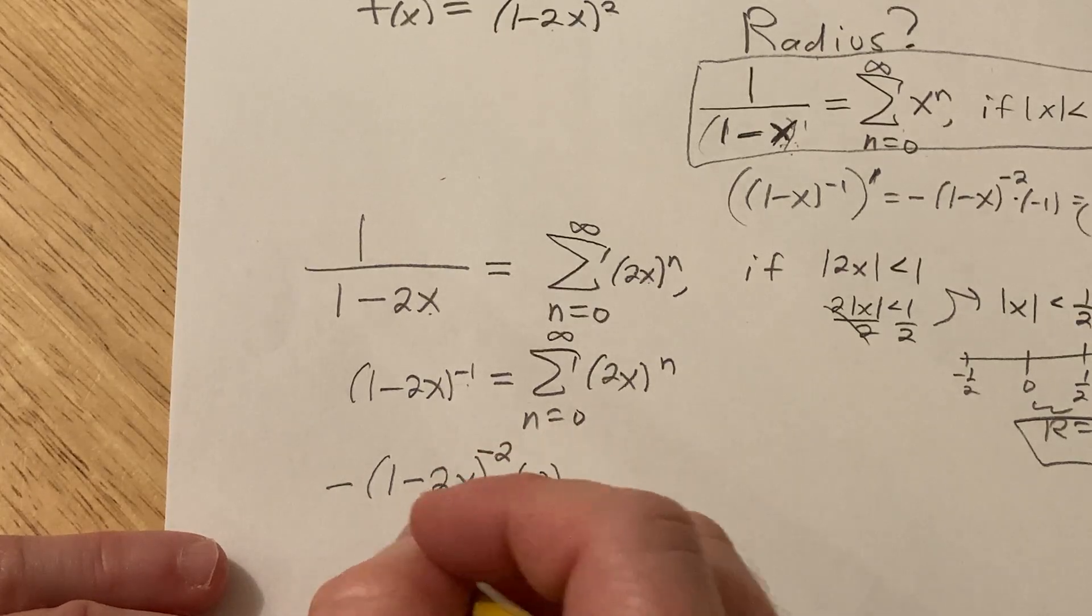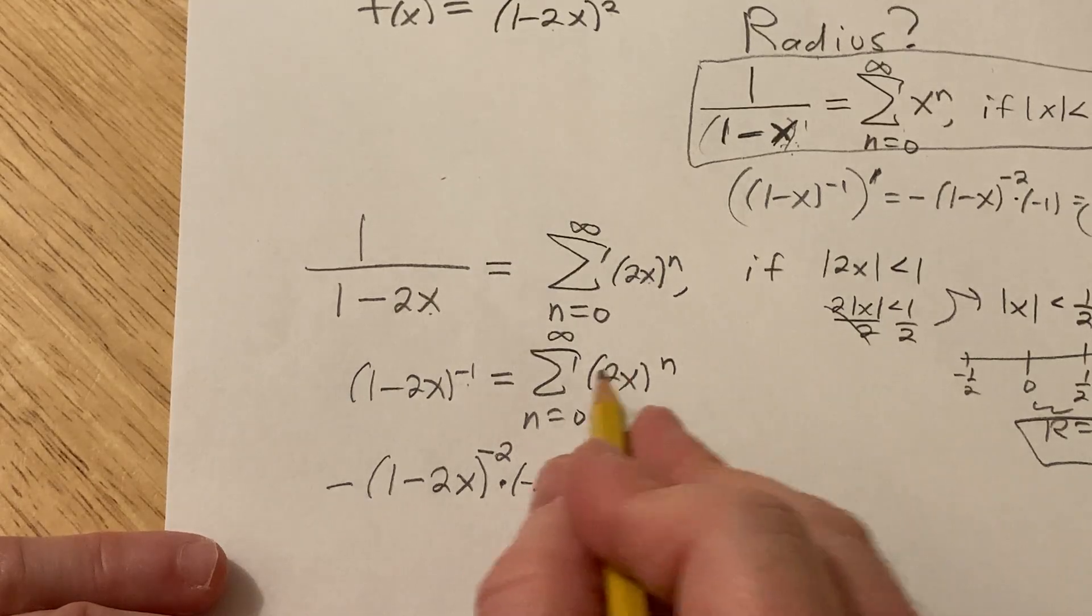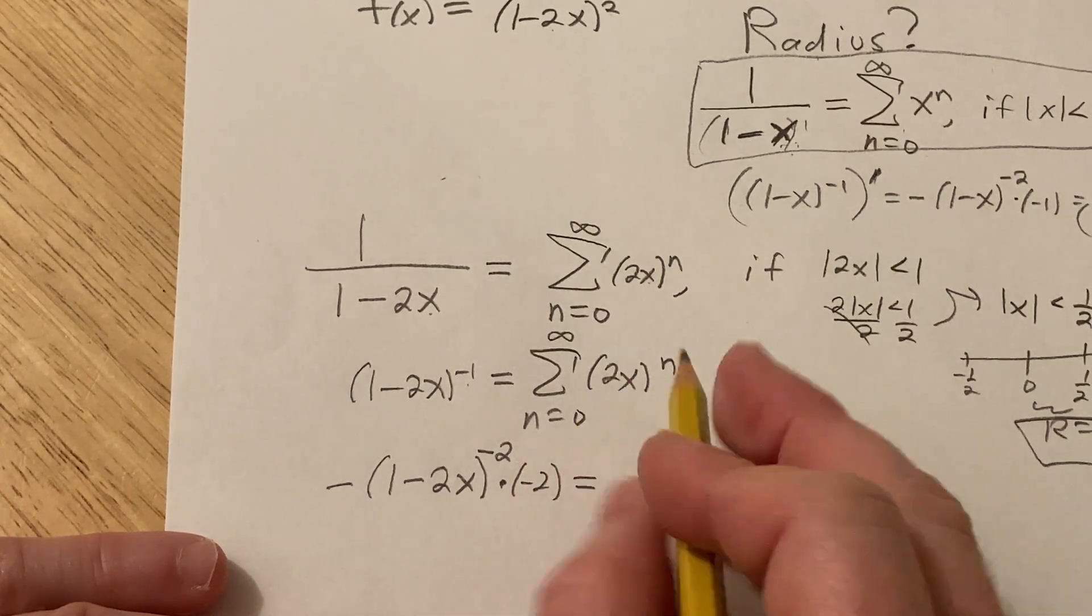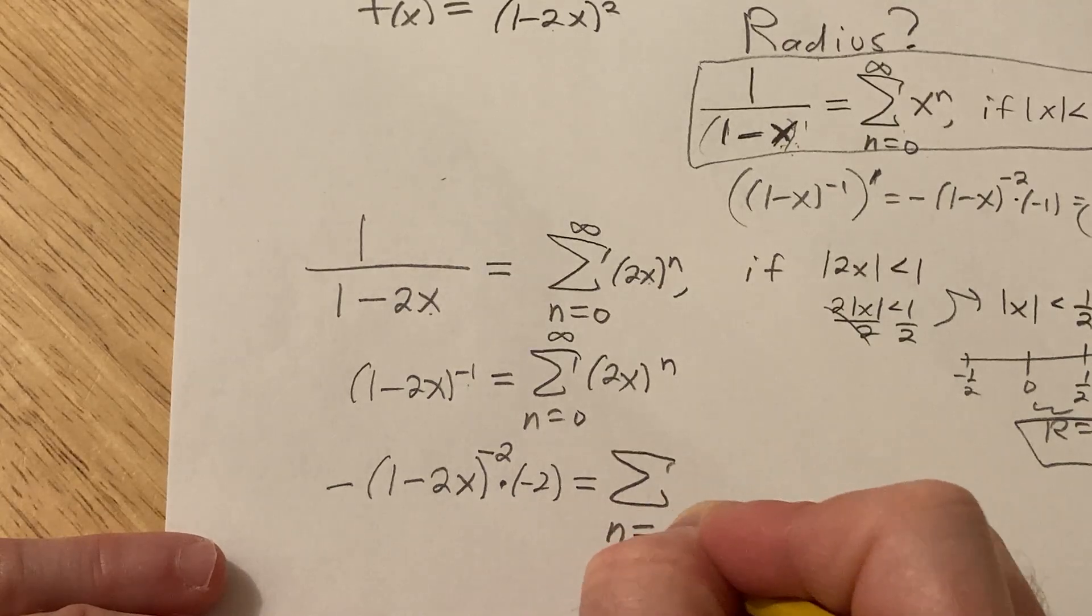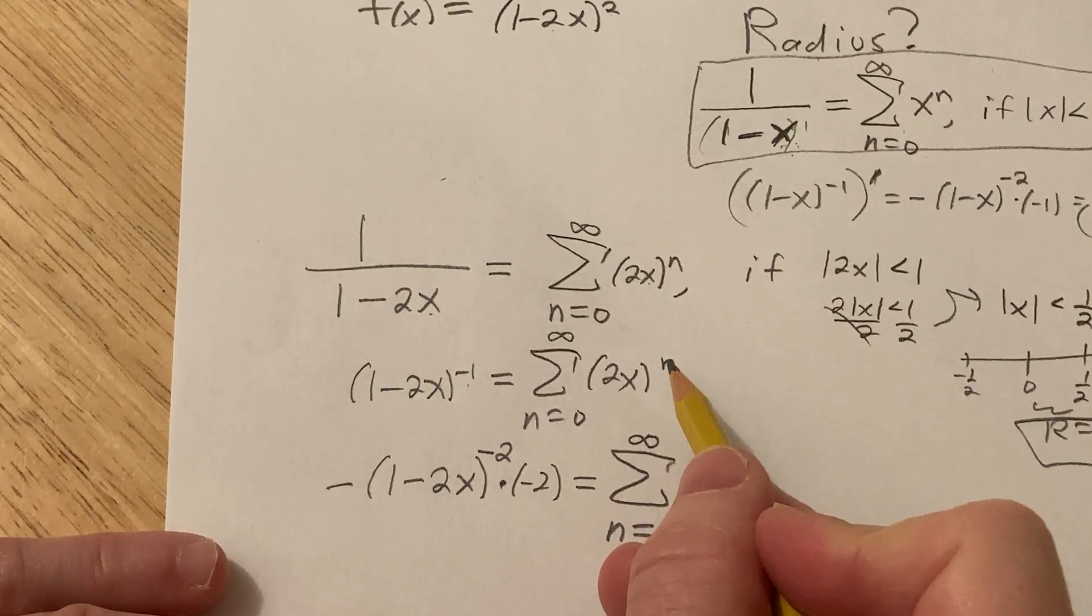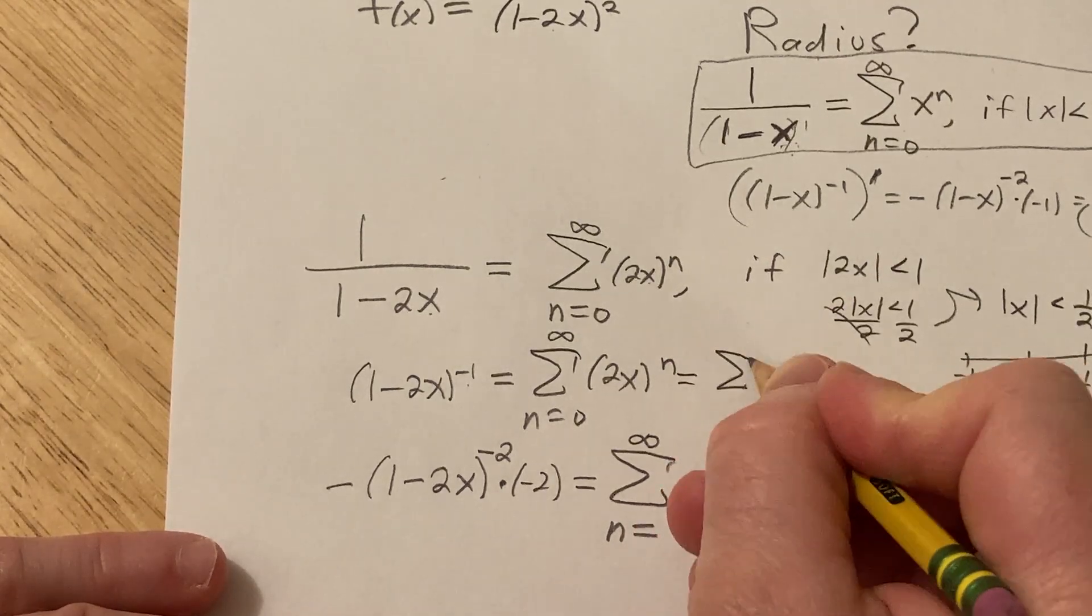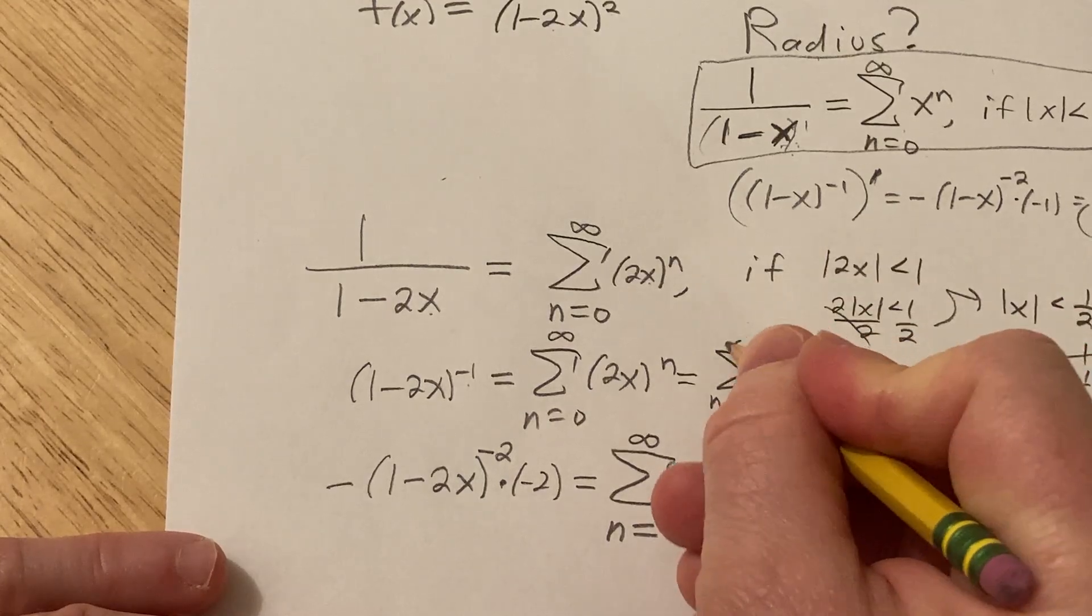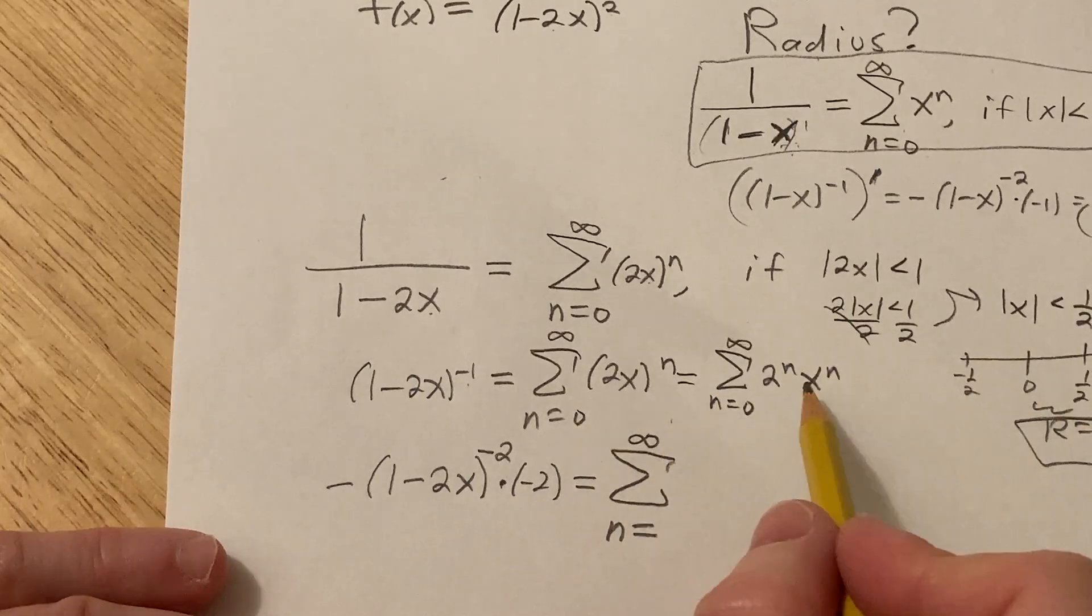Because the derivative of x is 1, the negative 2 hangs out, the derivative of 1 is 0. Okay, over here, when you differentiate, you have infinite sum, n equals, I'm going to fill that in a second, infinity. And then here, you know, maybe I'm going to write it like this just to make it a little bit cleaner so it's not confusing.